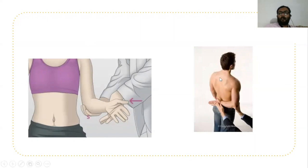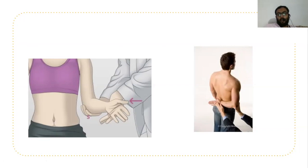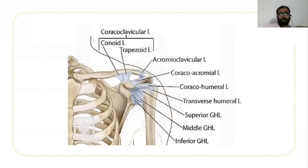In this photo, the shoulder joint is in internal rotation and the examiner pushes the hand of the patient, while the patient pushes the hand towards the examiner. This test is called Gerber's lift-off test. If the patient feels pain on the anterior side, then the subscapularis muscle is affected.